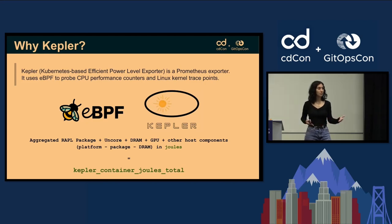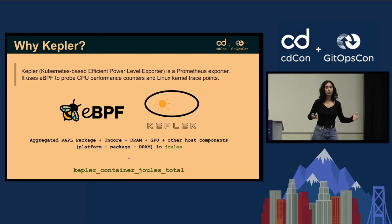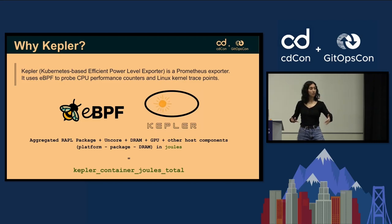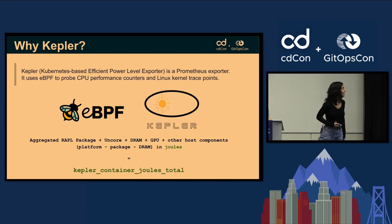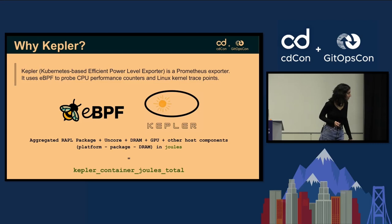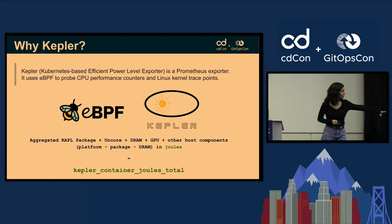Joules is a metric for energy. Joules over time gives you watts. So if you look at joules over, for example, two hours, you'll get the watts equivalent, which you can then multiply by a carbon coefficient for a given electricity grid to get the carbon emissions for your software. And so eBPF for monitoring is really cool and a growing topic. In Prometheus, what you end up having is this Kepler container joules total metric, which is amazing.